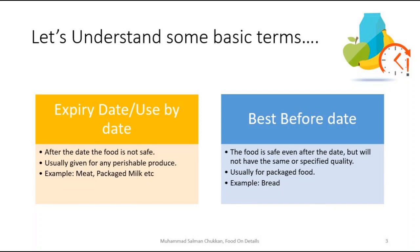Most of the time, we get a small confusion between expiry date and best before date. So before going into the details of ASLT, let's understand the difference. Expiry date means that after a specific date, the food is not at all safe to consume. Usually, expiry date is given for highly perishable products like meat or packaged milk such as pasteurized milk — expiry date and use-by date have the same meaning. Whereas best before date is a date after which the food company is not assuring that specific quality of the product. Usually, best before date is given for packaged food products — the main example is bread.